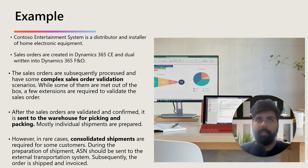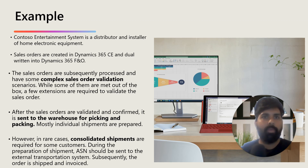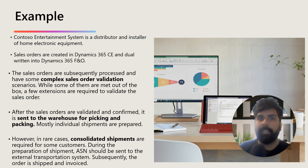For our example, Contoso is a distributor and installer of home electronic equipment. Sales orders are created in Customer Engagement and Dual Write is used to create the orders in F&O. The sales orders are subsequently processed with some complex sales order validation scenarios — some met out of the box and a few extensions or developments required. Once validated and confirmed, orders are sent to the warehouse for picking and packing.